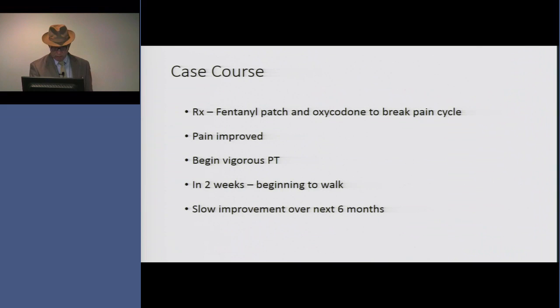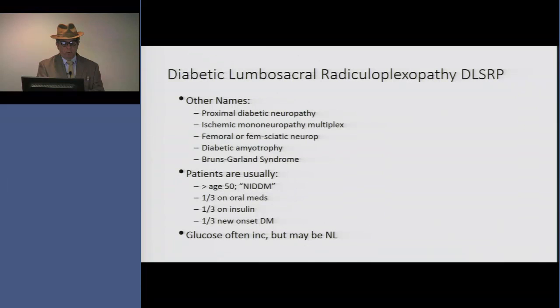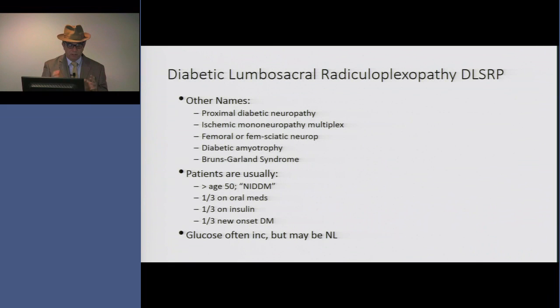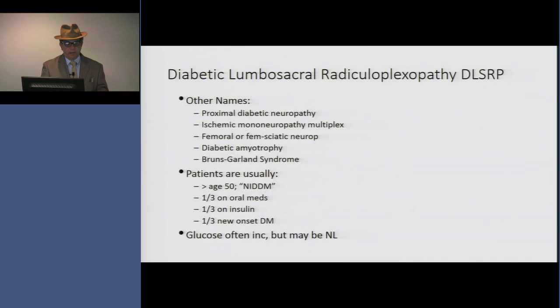The entity of diabetic lumbosacral radiculoplexopathy has been known since the late 1800s, when Dr. Bruns in Germany first described it. There were papers about it in the 1950s by Dr. Garland as well, and it's been called various names. One name is diabetic amyotrophy, which just means loss of muscle trophy from diabetes due to the atrophy. But what it really is is multiple small infarcts in the roots and plexus in an asymmetric fashion, involving one leg and occasionally spreading to the other. It can occur in a diabetic who's either well-controlled or poorly controlled, on oral meds or on insulin, and a third of patients are new diabetics — so the neurologist is often the first to arrive at the diagnosis of diabetes.